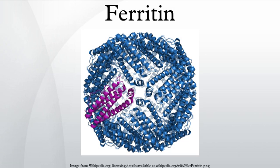Ferritin that is not combined with iron is called apoferritin. Ferritin is a protein of 450 kDa consisting of 24 subunits that is present in every cell type. In vertebrates, these subunits are both the light and the heavy type with an apparent molecular weight of 19 kDa or 21 kDa respectively. Their sequences are about 50% homologous. Amphibians have an additional type of ferritin. The single ferritin of plants and bacteria most closely resembles the vertebrate H-type.